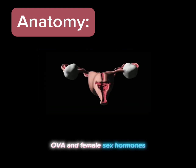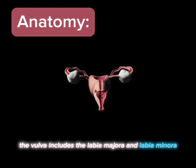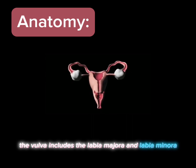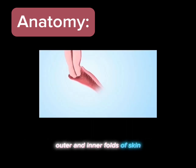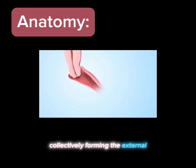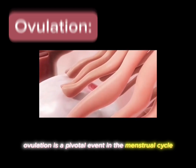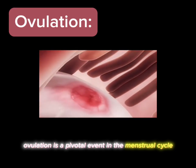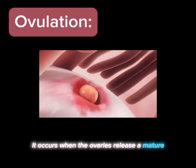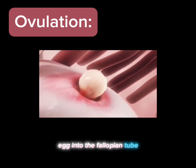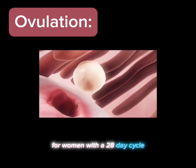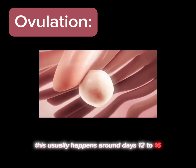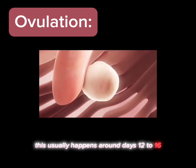The vulva includes the labia majora and labia minora — outer and inner folds of skin — the clitoris, a sensitive organ, and the vaginal opening, collectively forming the external genitalia. Ovulation is a pivotal event in the menstrual cycle. It occurs when the ovaries release a mature egg into the fallopian tube. For women with a 28-day cycle, this usually happens around days 12 to 16.